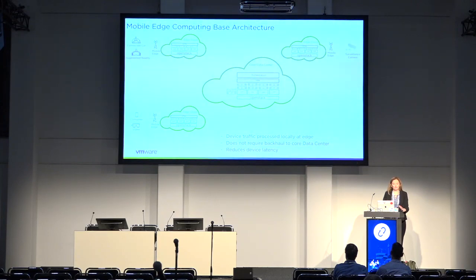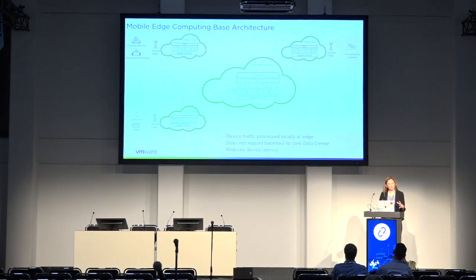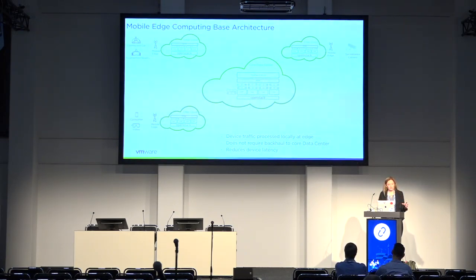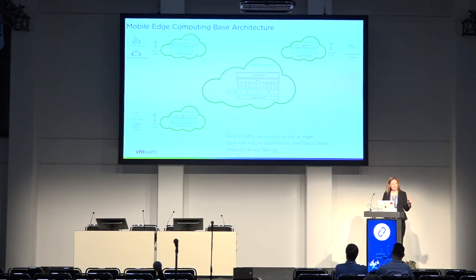When you look at mobile edge computing or multi-access edge computing architecture, what we're really looking at is a centralized control plane where your orchestration lives and your core VIM components live. And then you've got these edge data centers. An edge data center could be as small as one node — it could be a cell phone, it could be a connected car, or it could be a micro data center. When you look at the shape of these types of architectures, they really take different types of iterations, and because what you define as the edge could be so many different things, it could even be a camera.